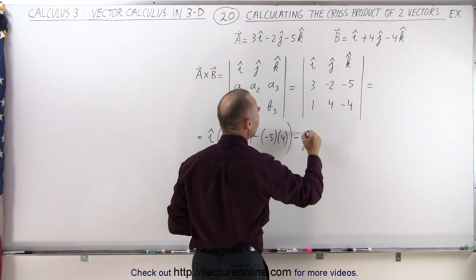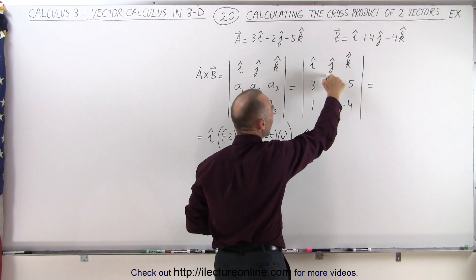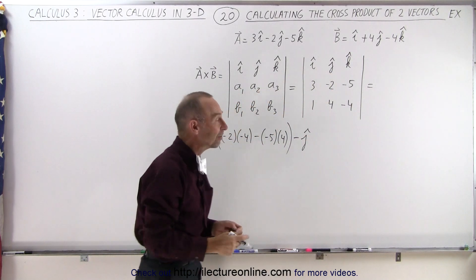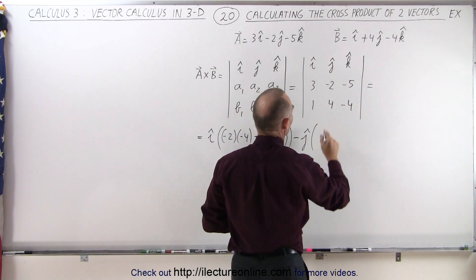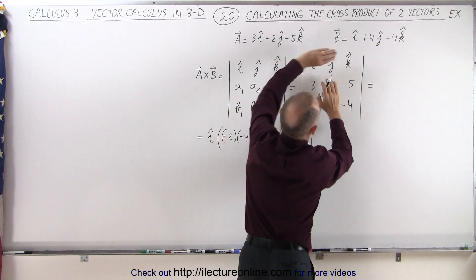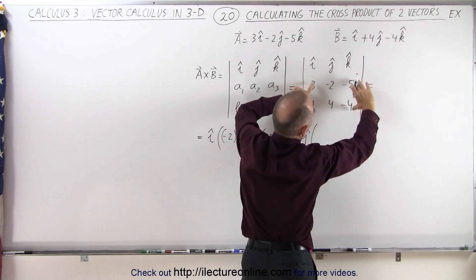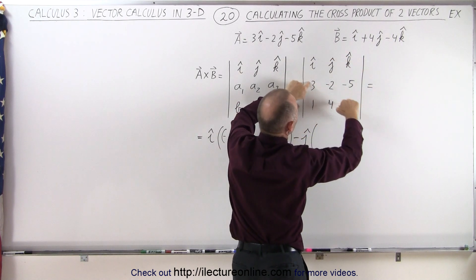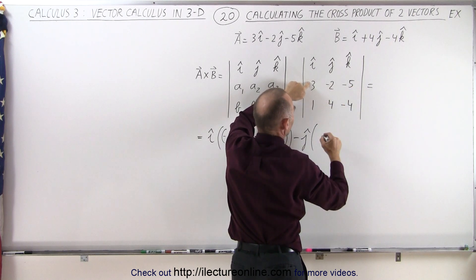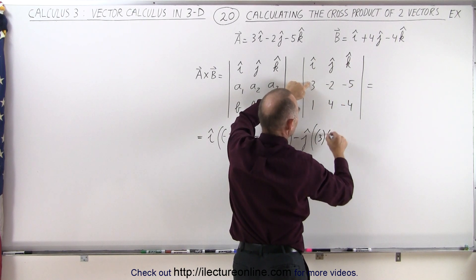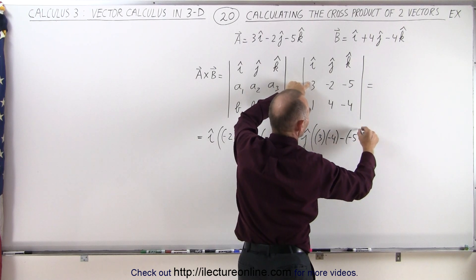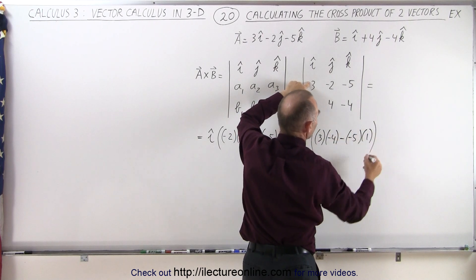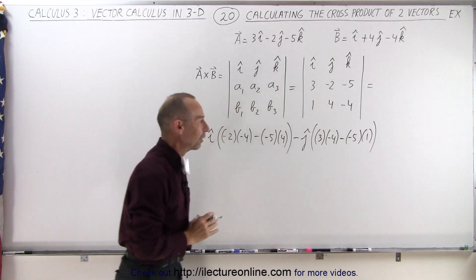Now you go minus j. Remember this is plus, minus, plus. You alternate signs in front of the unit vector. So minus j times, you get rid of this column and this row like this. That gives you these four elements. So you multiply these two together and subtract when you multiply those two together. That gives you 3 times a negative 4 minus a negative 5 times a positive 1. That gives you the second component of the cross product.